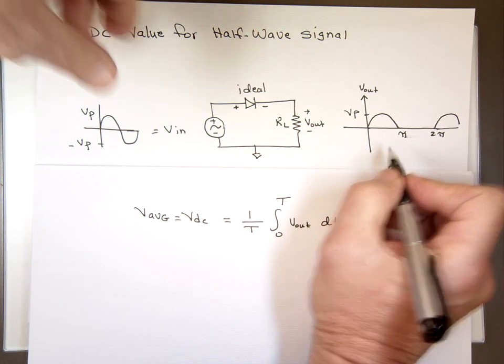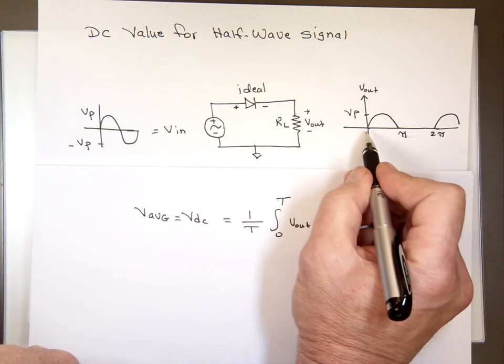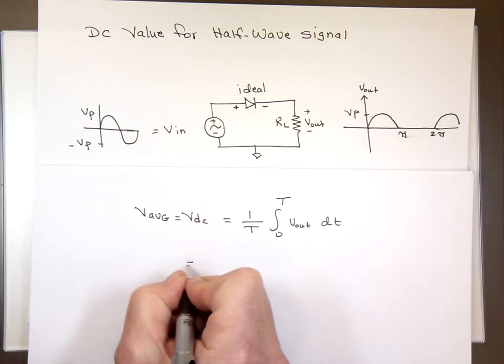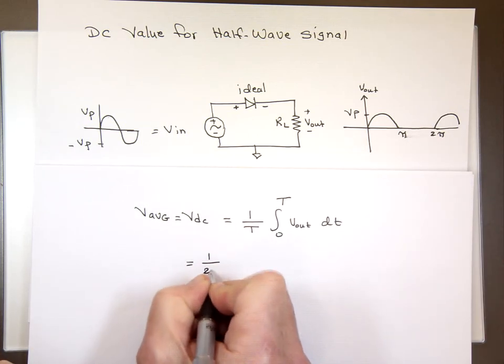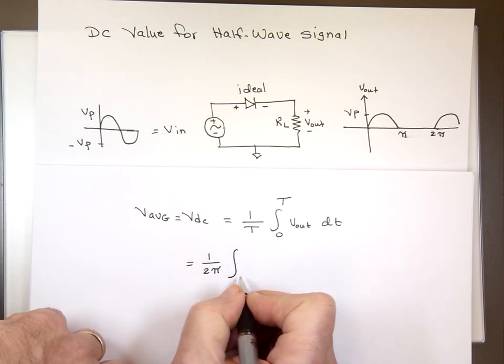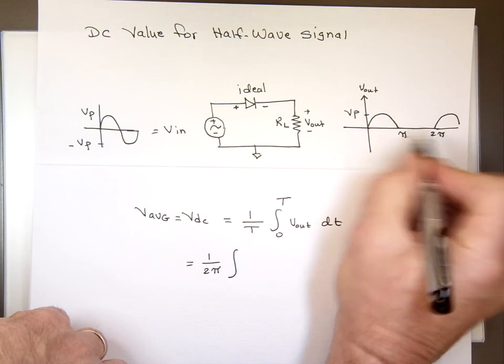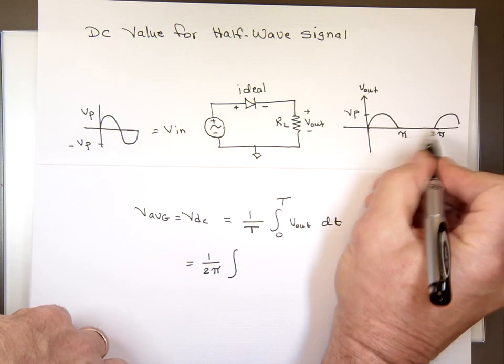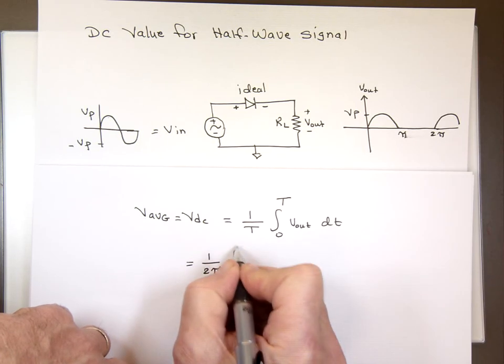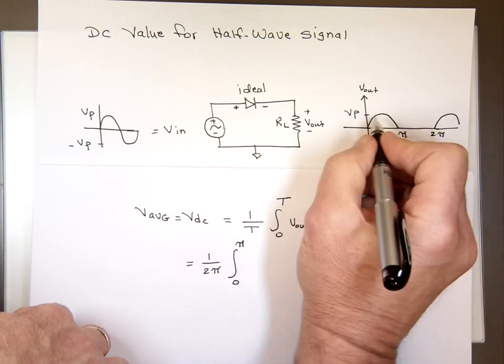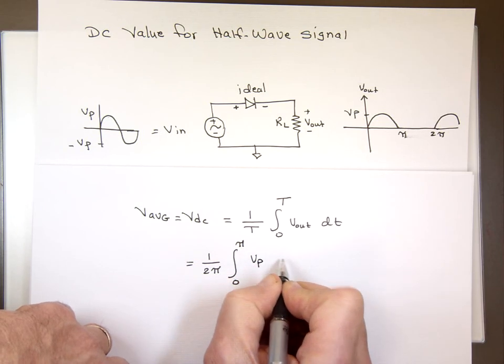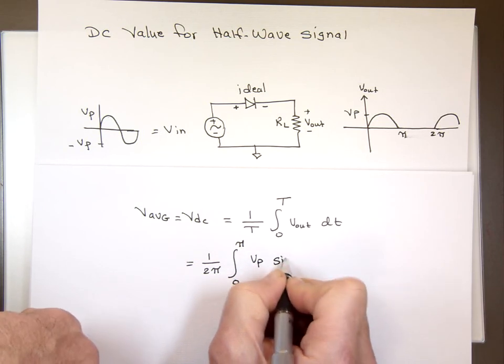So my period here, how long it takes, when you look at this, it's actually 2 pi. It repeats itself every 2 pi. So that would be 1 over 2 pi. The integral from where? From 0 to 2 pi. But if you notice, from pi to 2 pi, this function has a value of 0. So I'm not going to use that. I'm only going to go from 0 to pi, and this function will be V-peak times the sine of T, dt.